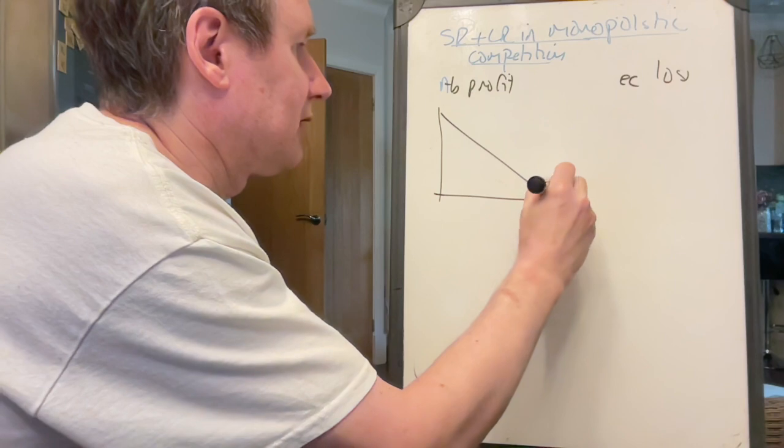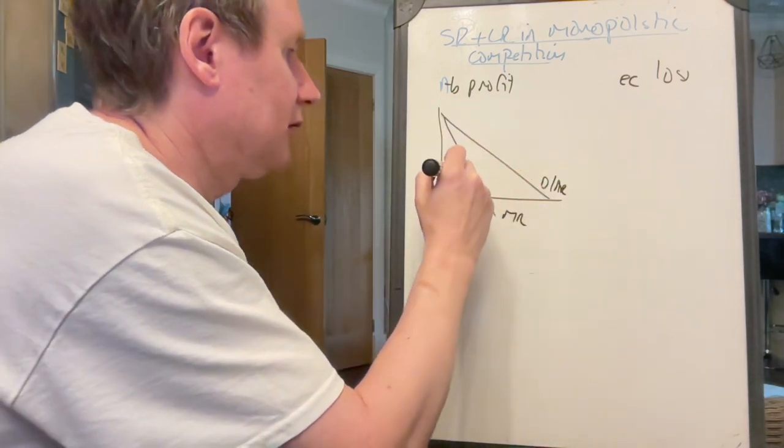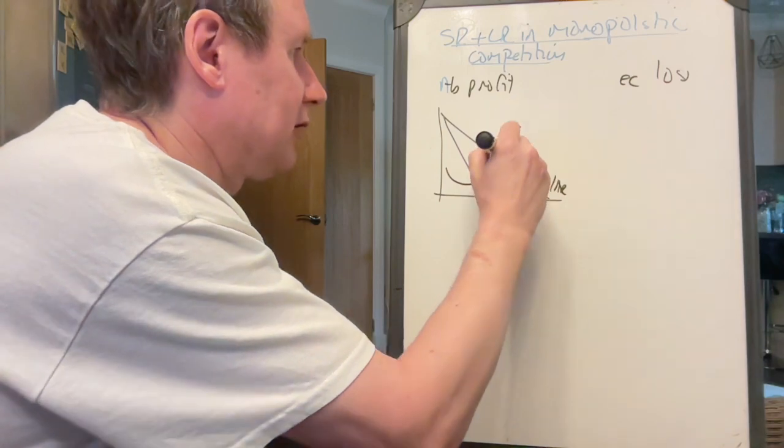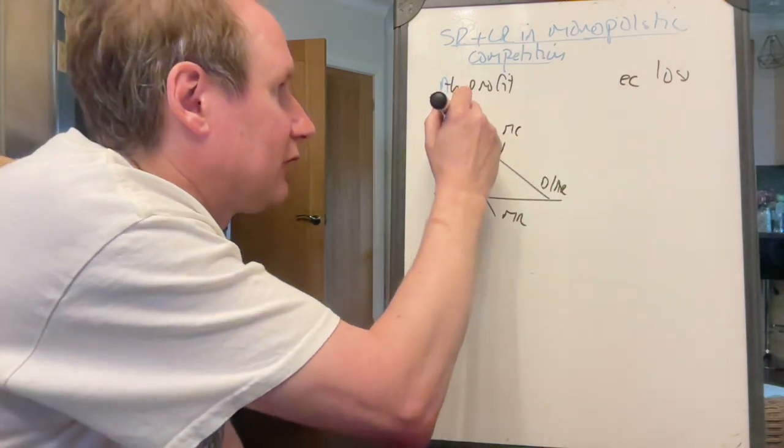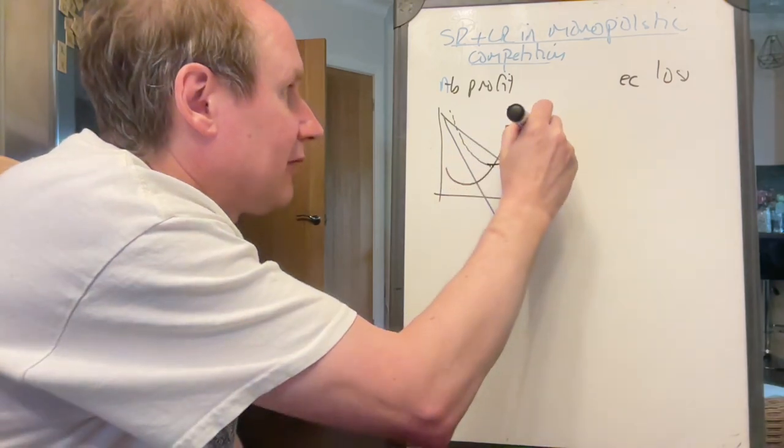So the way we can draw that, there's demand and average revenue, marginal revenue, marginal cost. And we said, if we want to make the firm have abnormal profits, we need average cost to go below average revenue.